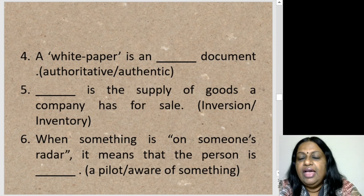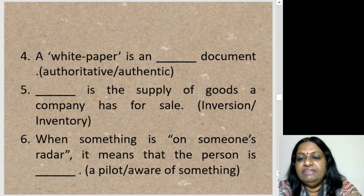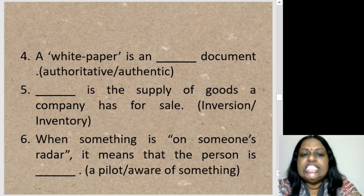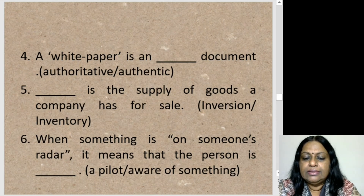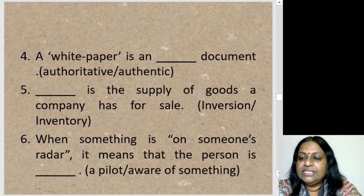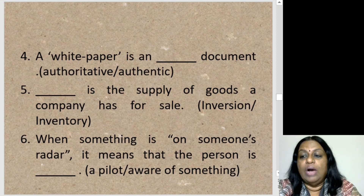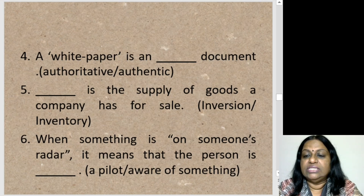Sentence five: 'Blank is a supply of goods a company has for sale.' The options are 'inversion' or 'inventory.' Inventory — the list of products a company has for sale is called its inventory. Sentence six: 'When something is on someone's radar, it means that the person is blank.' When somebody says 'you are on my radar,' it means that they are aware of something — they know about you.